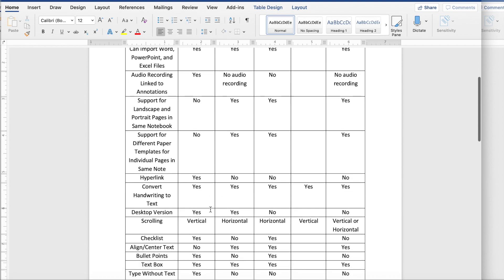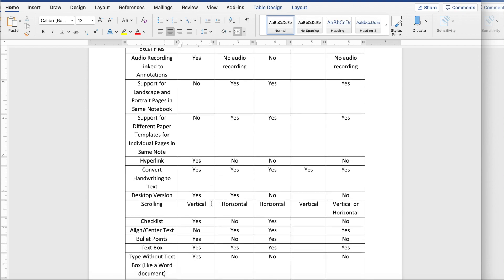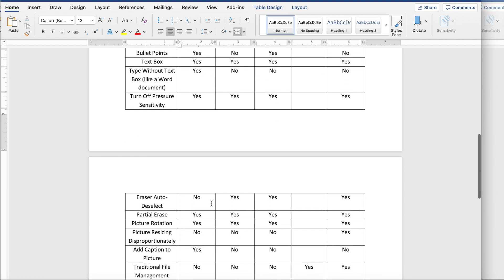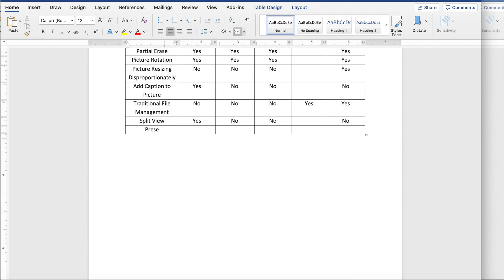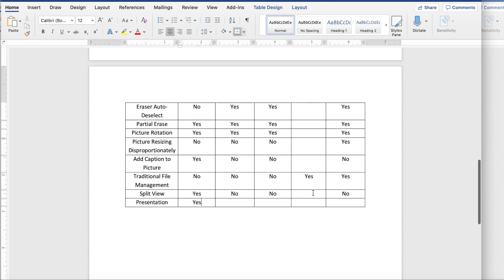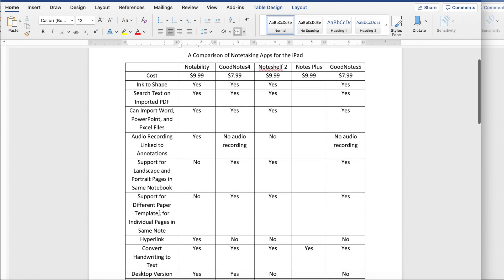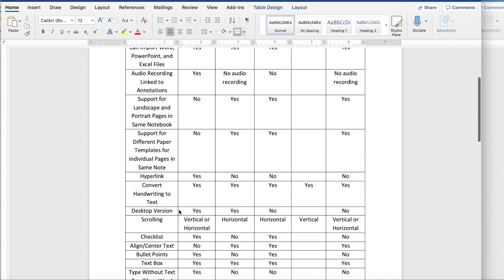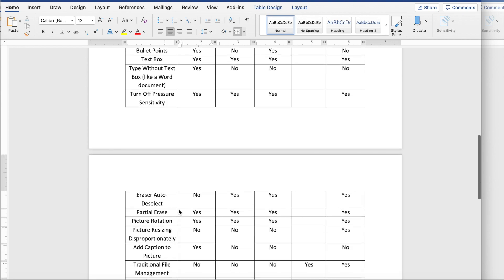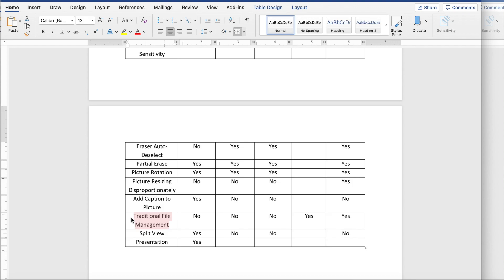Here now we can add horizontal scrolling for Notability and presentation mode for Notability as well. I'm not actually sure yet if GoodNotes 5 has added a presentation mode or not. I haven't used GoodNotes 5 in a little bit. I will be looking into that and also doing more videos on GoodNotes 5 to see if they're trying to keep up more with Notability. There are some things that Notability is still lacking that I think they should add. For example, having landscape and portrait pages in the same notebook, different paper templates for individual pages within the same note. And of course, file management is a huge problem with Notability. They do not have traditional file management and they really need to implement that.